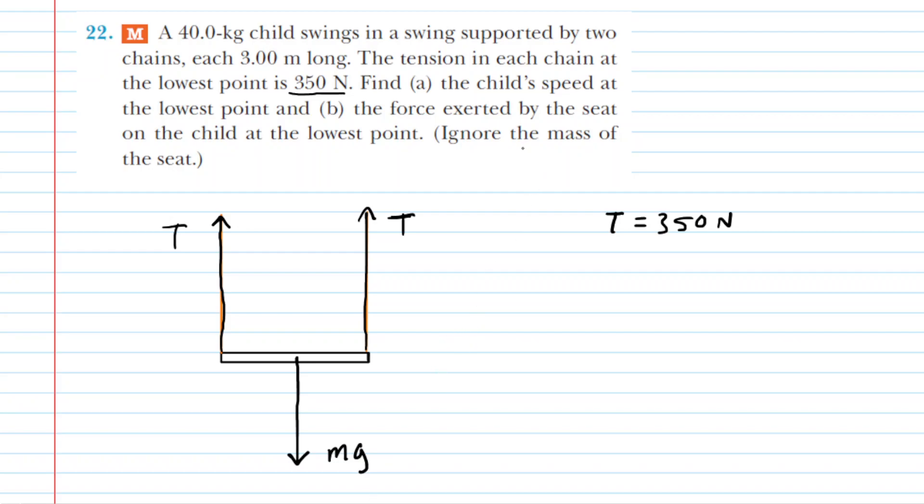We can also notice that because we're ignoring the mass of the seat, we don't have to show a gravitational force pulling down on the seat itself. The only gravitational force will be the one exerted by the child's weight downward, which we again have labeled Mg.